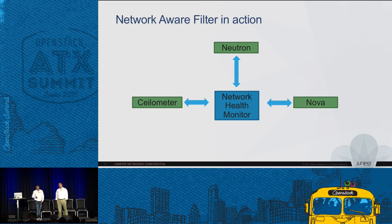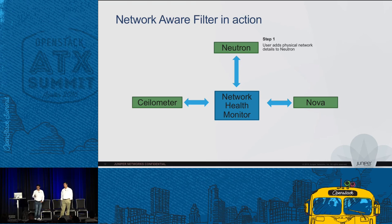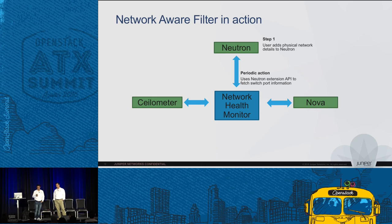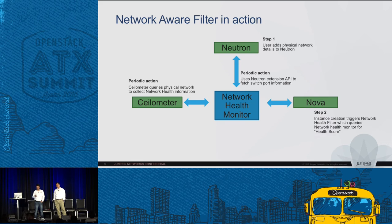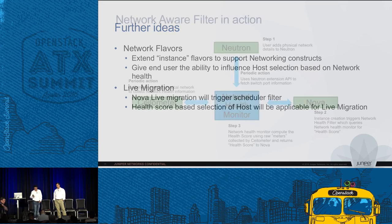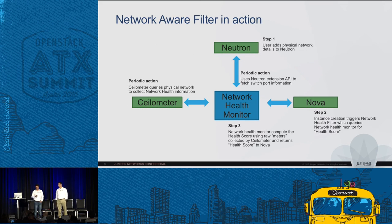Looking at the component interaction flow: when a user adds physical network details to Neutron via the physical network APIs, it triggers a periodic action for the network health monitor to extract all physical network information from Neutron and begin periodically collecting network attribute data for those physical network links. The second step occurs when a user tries to schedule a VM — Nova queries the network health monitor, which queries Ceilometer and returns a composite score used to rank the various compute nodes.